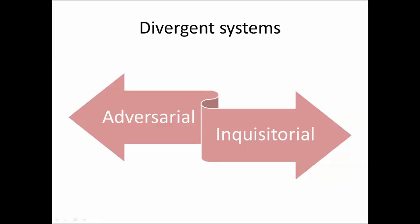Another strong difference between the two systems is the concept of truth. In the adversarial system, the two sides produce evidence for the truth to be determined by the arbiter of fact. Whereas the purpose of the judge in the inquisitorial system is to actually find the truth and seek sufficient evidence in order to do that.